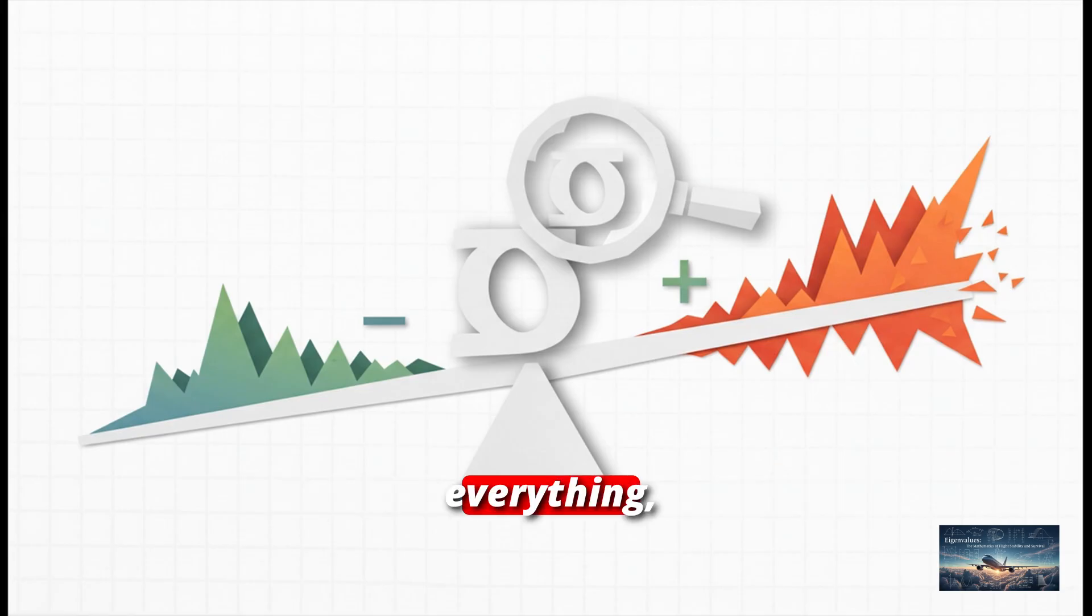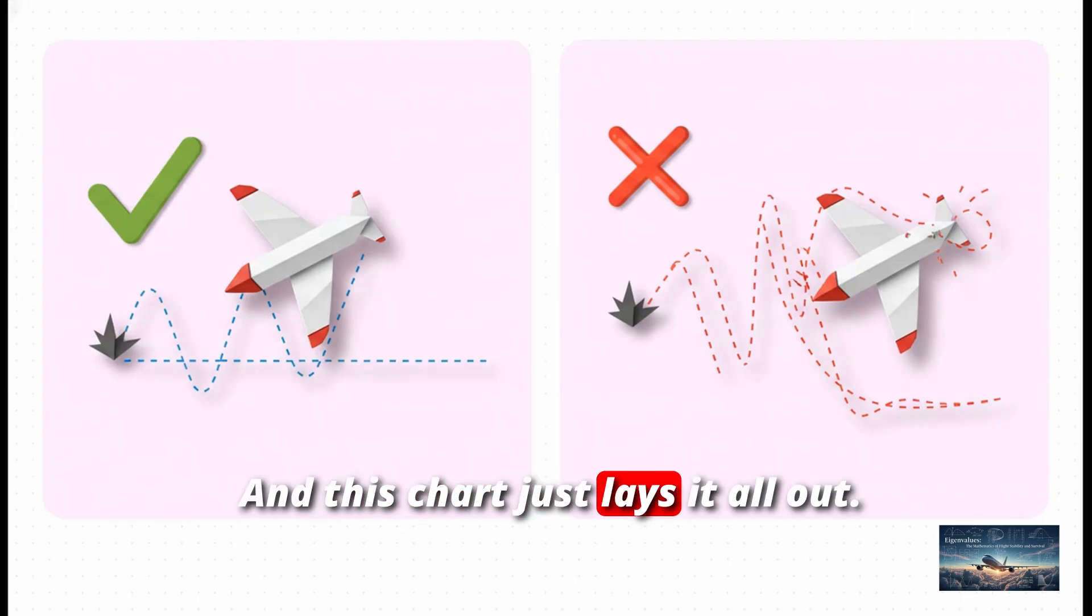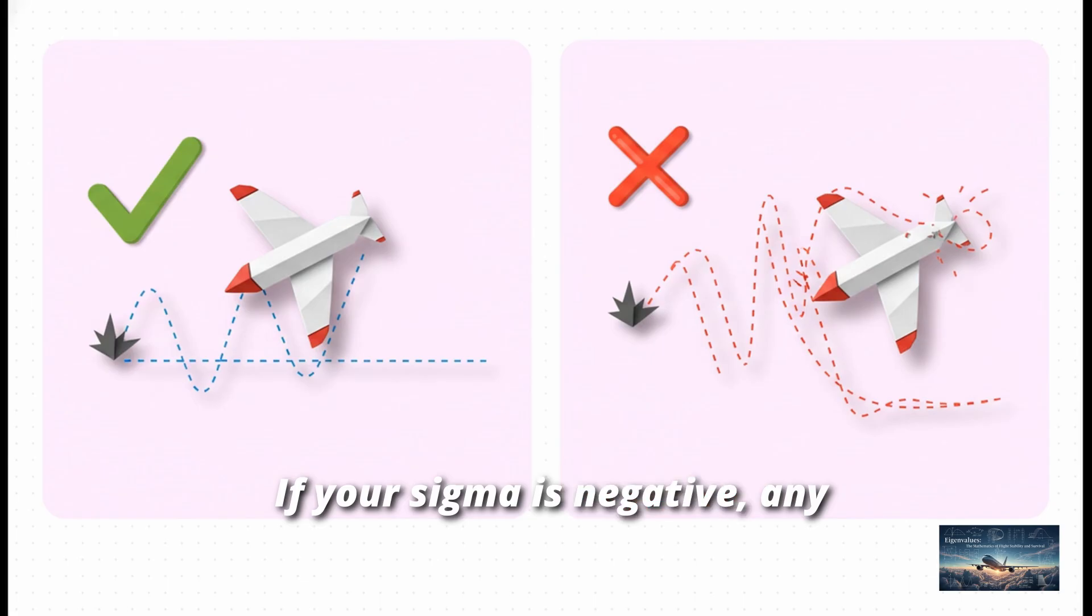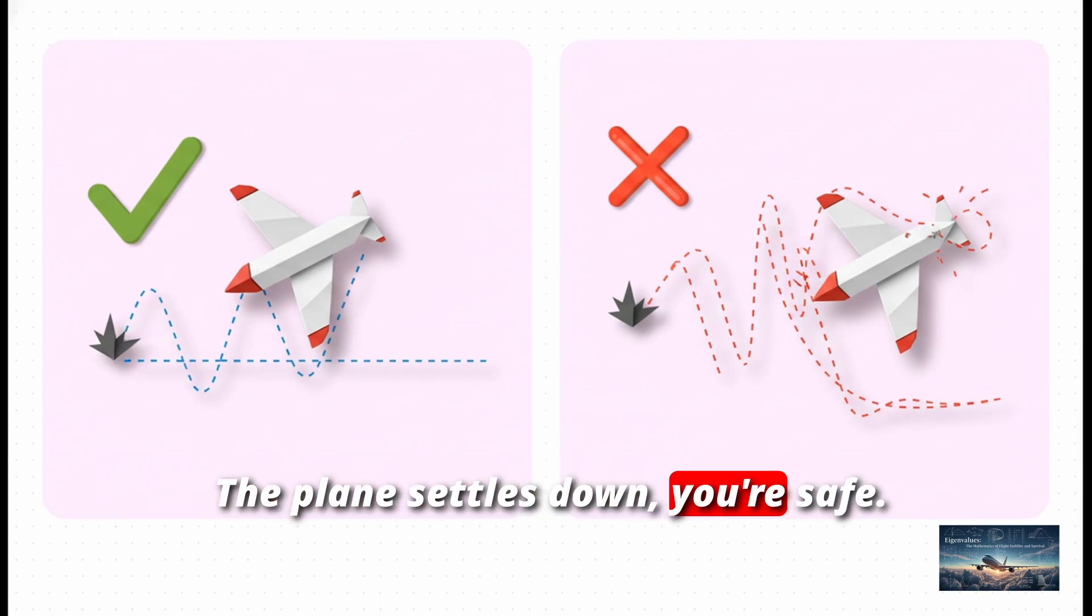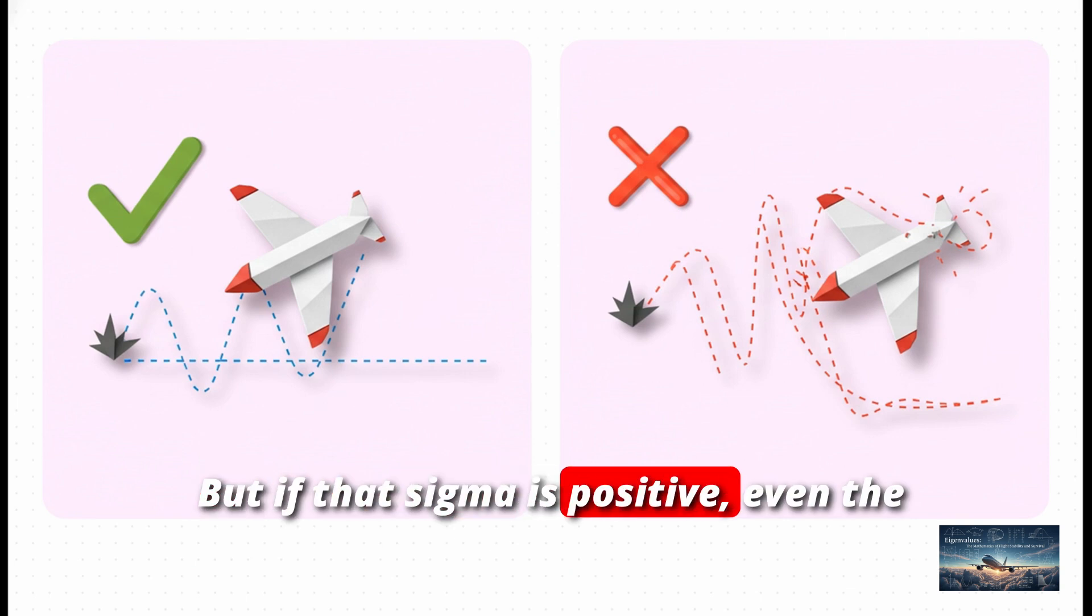Everything, and I mean absolutely everything, hinges on the sign of this one number. Is it positive? Or is it negative? And this chart just lays it all out. It's totally black and white. If your sigma is negative, any disturbance, a bit of turbulence, whatever, it just fades away. The plane settles down, you're safe.